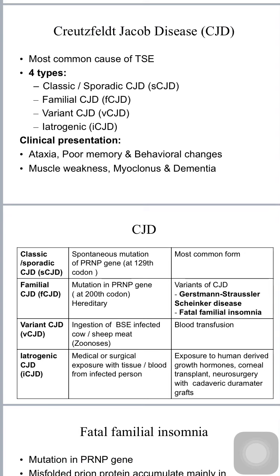Variant CJD is transmitted by ingestion of BSE-infected cow or sheep meat, making it a zoonosis, and can also be transmitted from an infected individual to a normal person by blood transfusion. Iatrogenic CJD is transmitted by exposure to human-derived growth hormones, injection of gonadotropin hormones, corneal transplant, neurosurgeries with cadaveric dura mater grafts, or even brain electrodes.